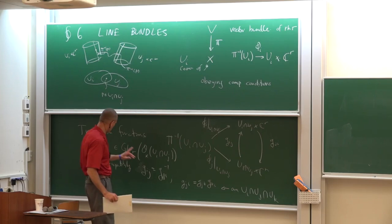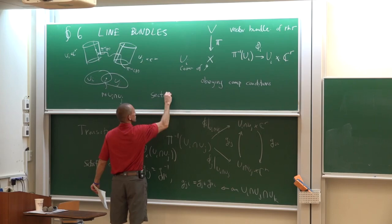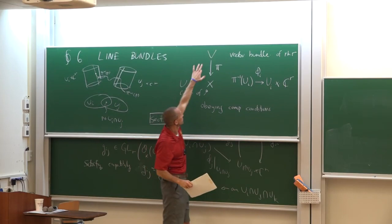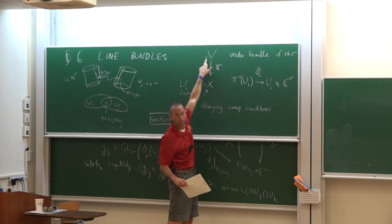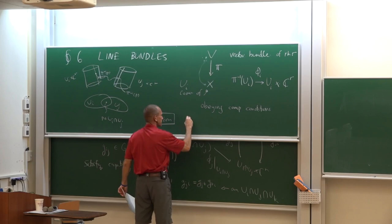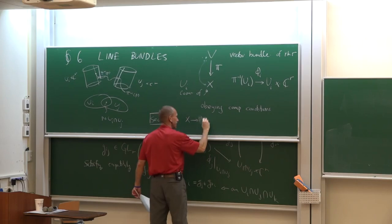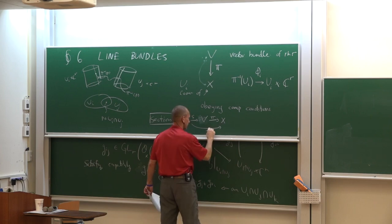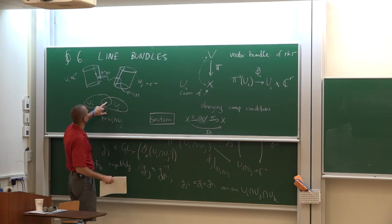The last thing is a section — these will be key objects for us. A section of a vector bundle: we have the map pi from V to X, and a section is a map going backwards from X to V such that s composed with pi equals the identity. In particular, a section takes a point p and sends it to some point in the fiber over it.